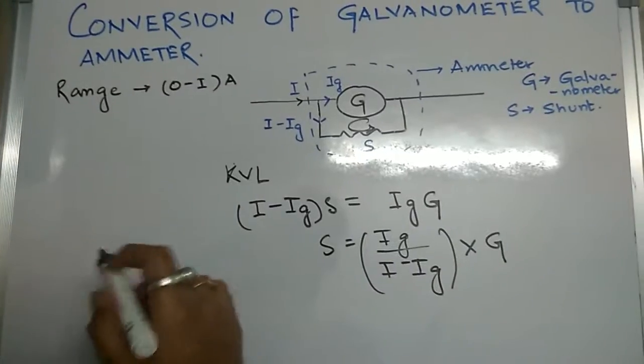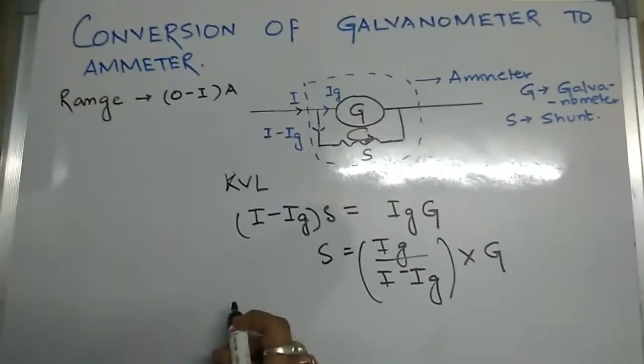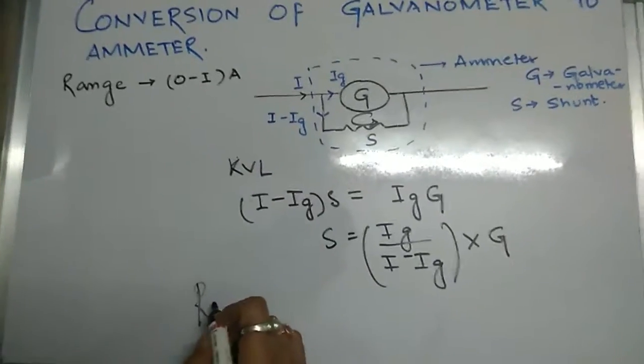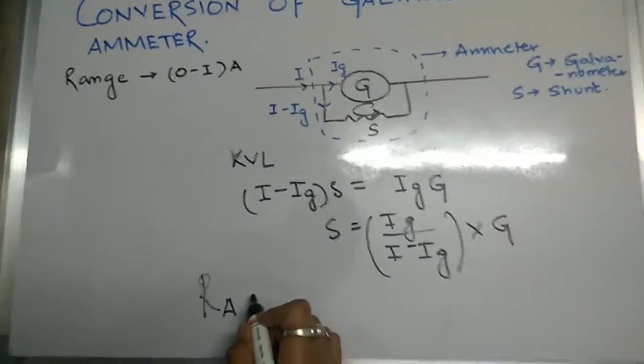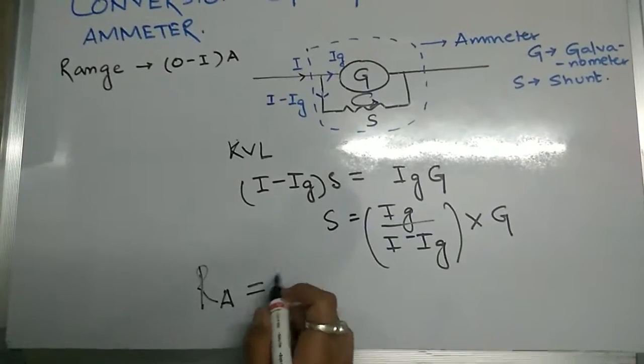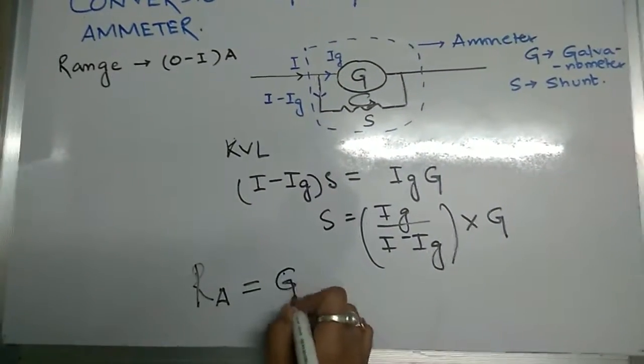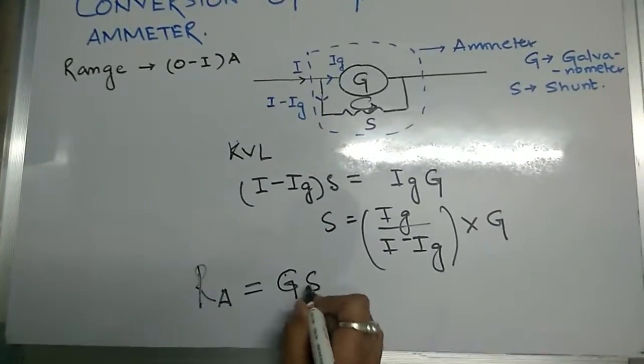And now for the resistance of the ammeter, it is given by resistance of galvanometer multiplied by resistance of shunt, divided by the addition of galvanometer and shunt resistance.